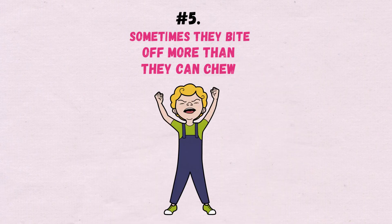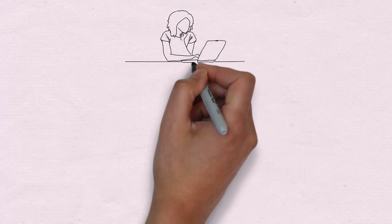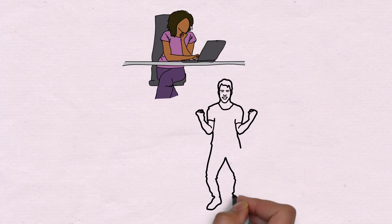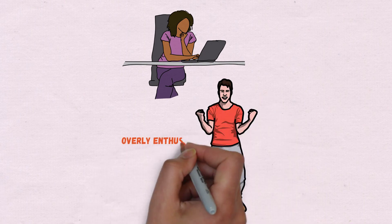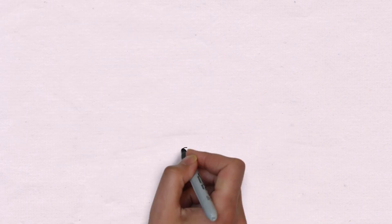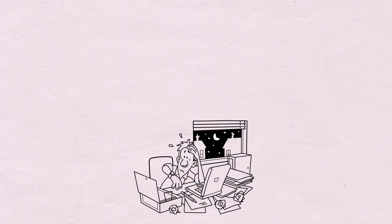5. Sometimes, they bite off more than they can chew. When they're starting a new project or implementing an idea, they're ecstatic to get it started. They may become overly enthusiastic and agree to a slew of chores without considering how they would complete them all.